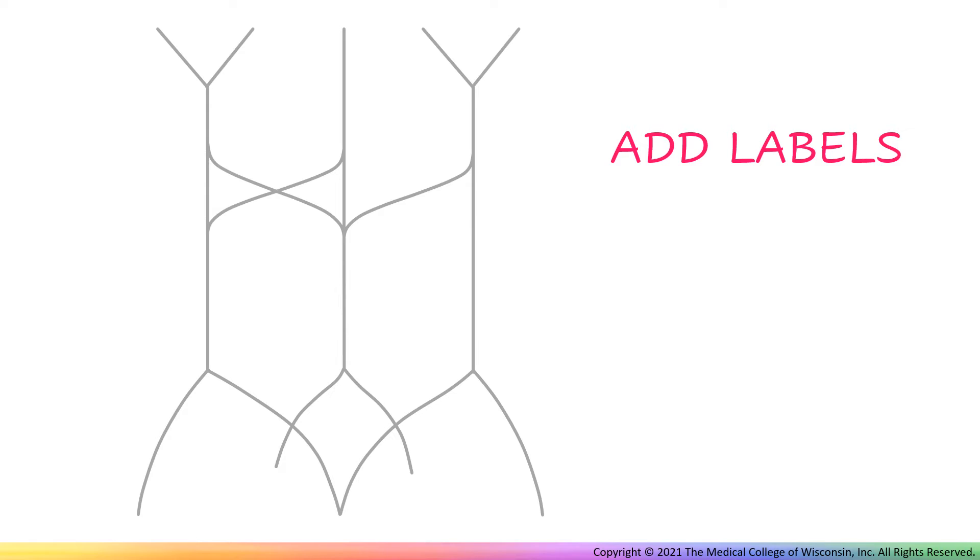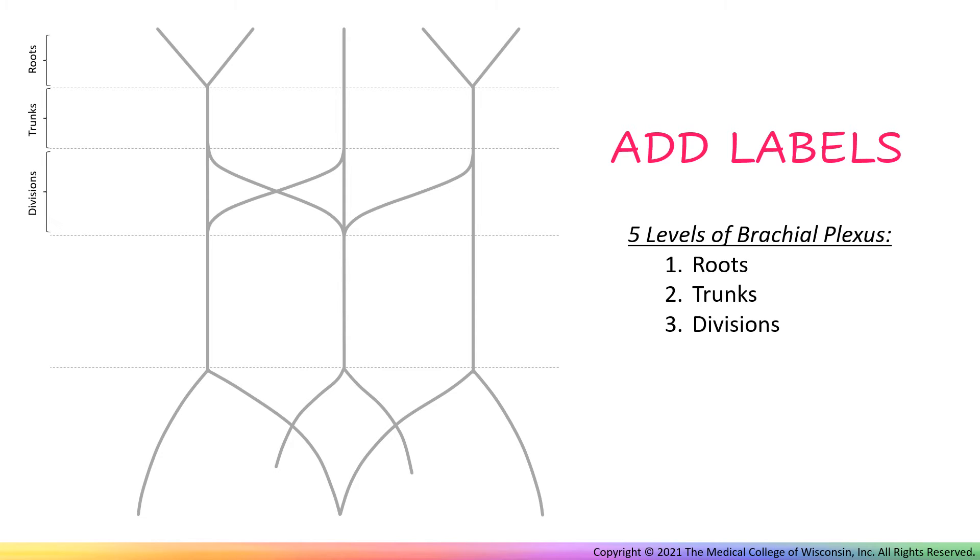Now let's label our diagram. Draw dotted lines across the diagram and label the five levels: roots, trunks, divisions, cords, and branches.